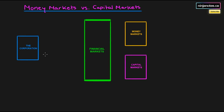Let's start off with money markets. Money markets only carry debt, and they only carry debt that has a maturity of less than one year.